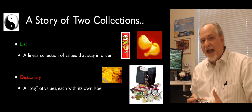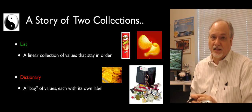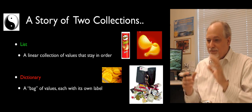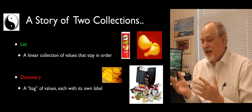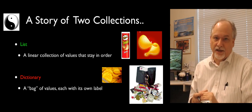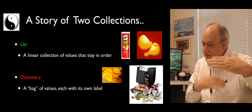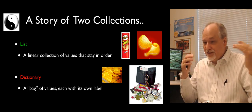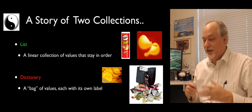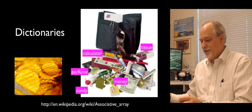A dictionary is a bag of values — it's not in any order, big stuff, little stuff, things have labels. You can also think of it like a purse with just things in it. It's not stacked — stuff moves around as you go. And that's a very good model for dictionaries.